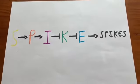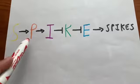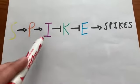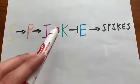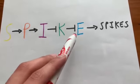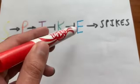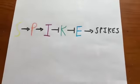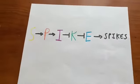In this pathway, S activates P, P activates I, I represses K. Since K is repressed, K cannot repress E, and E forms spikes. So let's say there is a mutant in the pathway.